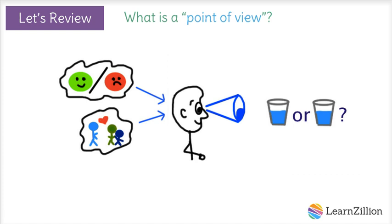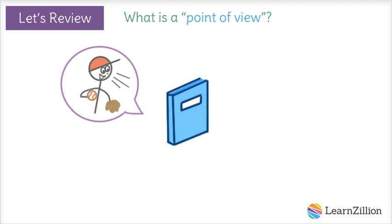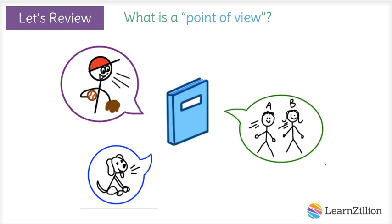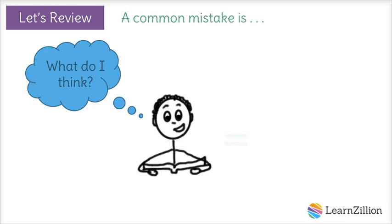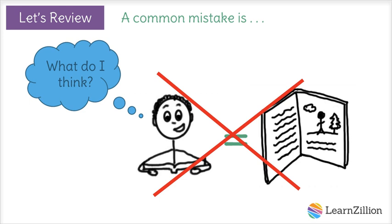In literature, a story or poem is often told from one or more character's point of view. In fact, the story might sound very different depending on who is telling it. We can figure out a character's point of view based on how they react to things that happen in the story. A common mistake readers sometimes make is to assume that the characters in the text have the same point of view as they do and think the characters would act the same way. But remember, not everyone sees things the same way that you do, so it's important to use text clues to figure out a character's point of view instead of just using your own.